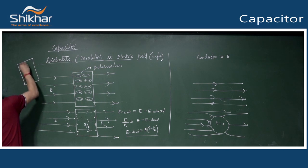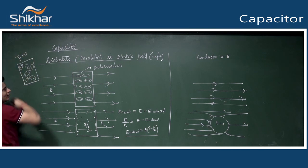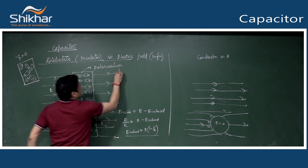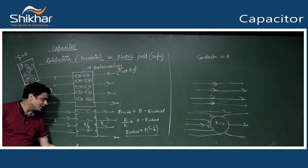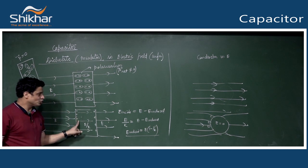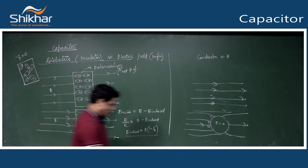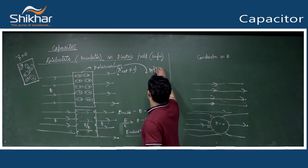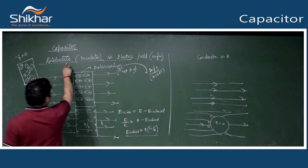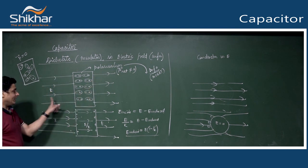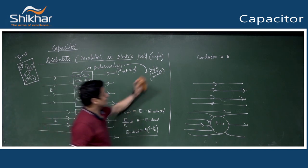Without an electric field, dipoles are in random directions so net dipole moment P_net is zero. When field is applied, dipoles align and P_net becomes non-zero. This is called polarization - the creation of net dipole moment due to external electric field inside a dielectric. This induced dipole creates an electric field in the opposite direction, reducing the net field to E/K.